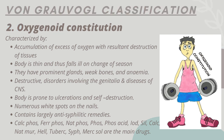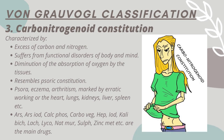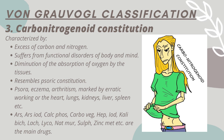Carbonitrogenoid constitutions are characterized by excess of carbon and nitrogen. Suffers from functional disorders of body and mind. Diminution of the absorption of oxygen by the tissues. Resembles suric constitution. Sura, eczema, arthritism, marked by erratic working of the heart, lungs, kidneys, liver, spleen etc. Arsenic, Ars Iod, Calcaria Fos, CarboVeg, Iotum, Calibi, Lachesis, Lyco, Natrum Mer, Sulfur, Zincum Med are the main drugs.